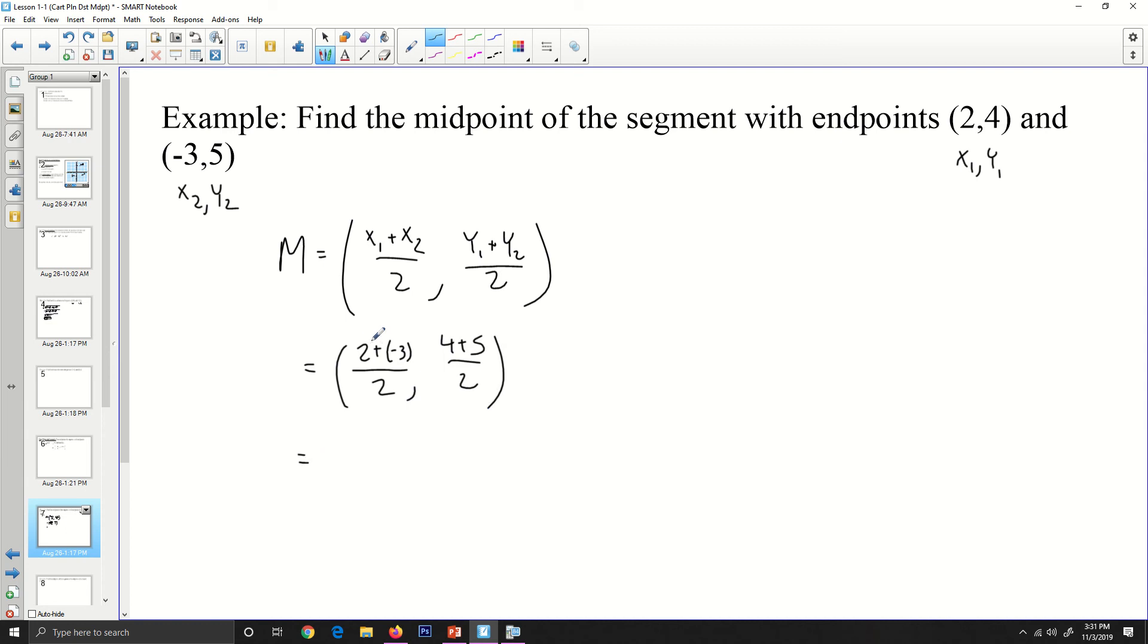And so 2 plus negative 3 is negative 1, negative 1 over 2 is 1 over 2. And then 4 plus 5 over 2 is 9 over 2. Now I know that this one is an improper fraction, but it is a reduced fraction. I can't reduce this fraction any further, so we can leave it like that in this course. And I will accept those. Let's move on to the next one.